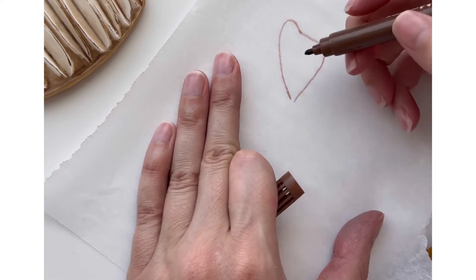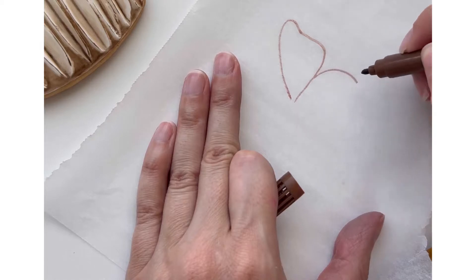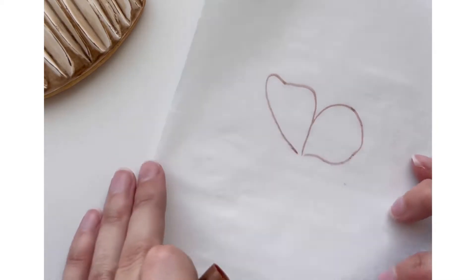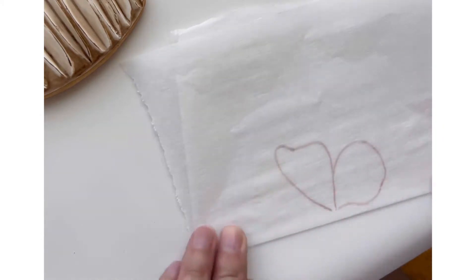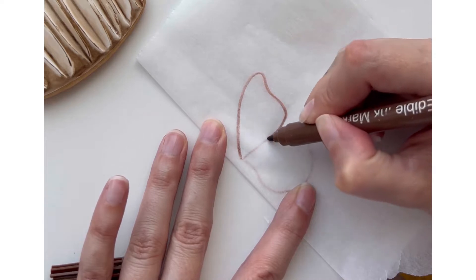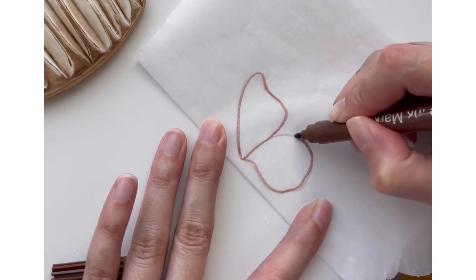If you have something that needs to be perfectly symmetrical, fold your parchment in half and trace over your first drawing. This will ensure you have two perfectly matched pieces of royal icing.